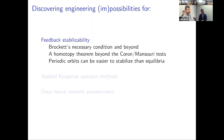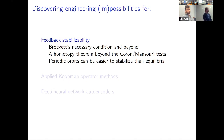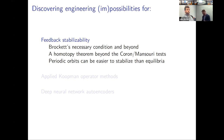To begin with the first topic, feedback stabilizability, I'm going to tell you about something called Brockett's Necessary Condition — the condition that gives you an obstruction to feedback stabilization. I'll also talk about results along the same lines due to Coron and Mansuri, and how to generalize those. Then we'll see some interesting connections with the question of stabilizing periodic orbits.